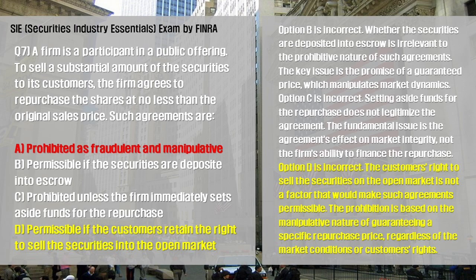Option D is incorrect. The customer's right to sell the securities on the open market is not a factor that would make such agreements permissible. The prohibition is based on the manipulative nature of guaranteeing a specific repurchase price, regardless of market conditions or the customer's rights.